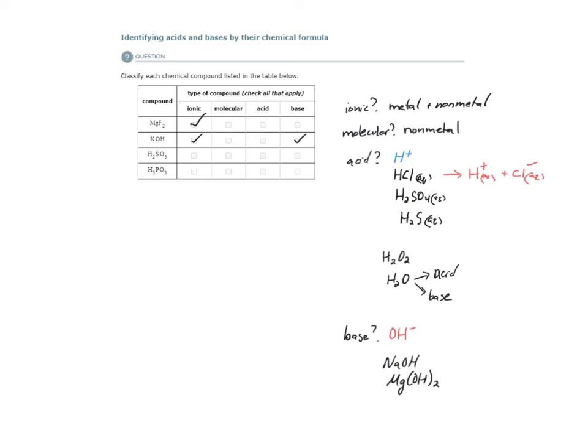Let's look at the next. We have sulfurous acid. I'm looking here. I know that this is not an ionic compound because I see no metal atoms. It would be molecular. So our compounds are either going to be ionic or molecular. In this case, I have a molecular compound. Also, it is an acid. Why? Because I see hydrogen here at the beginning of the chemical formula that is ionizable. So this would be a molecular compound that is an acid.